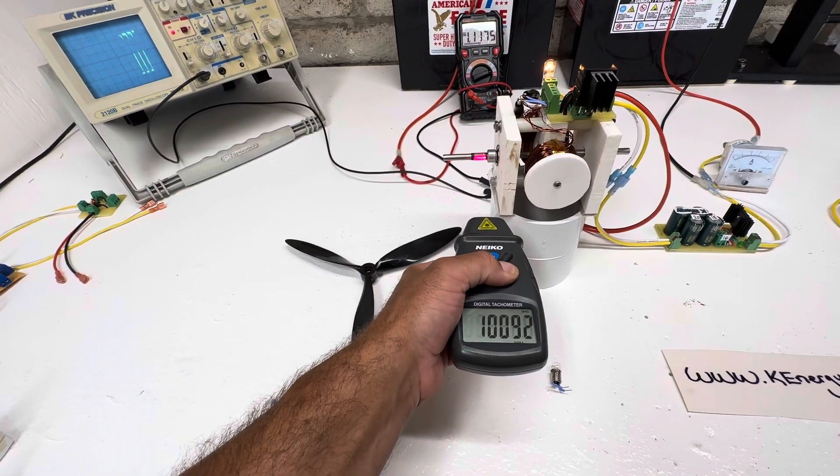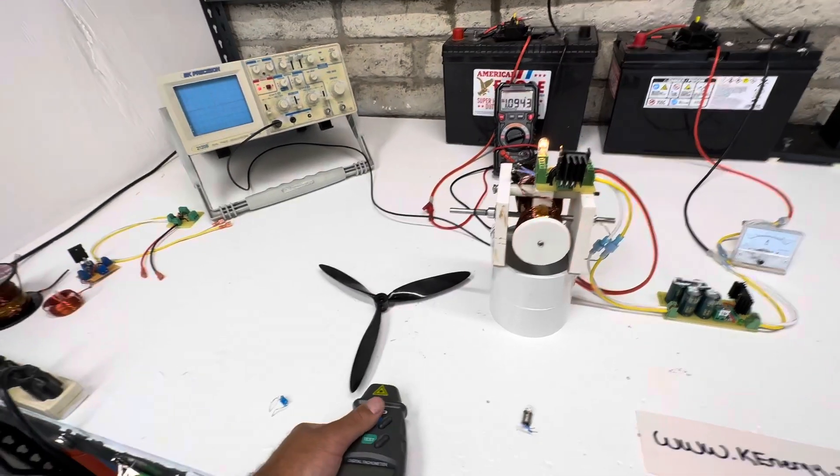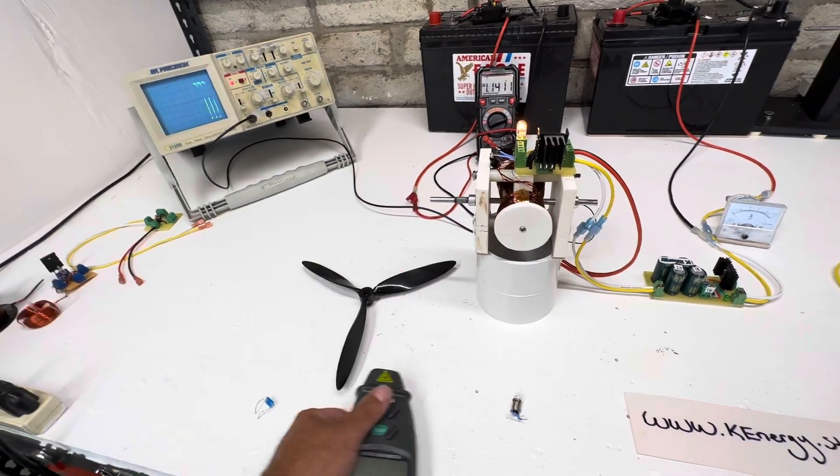So this is right around 10,000 rpm. On the previous video we were at 26,000, so putting it in series made us use a little bit less power.